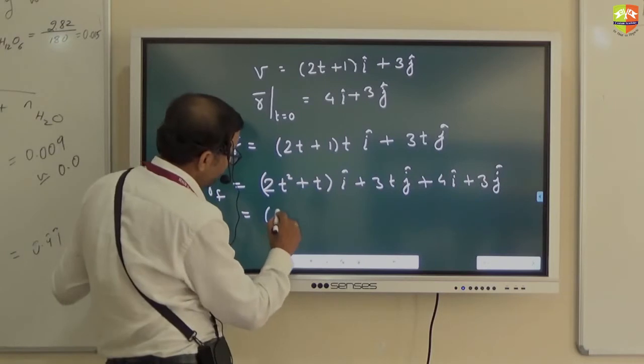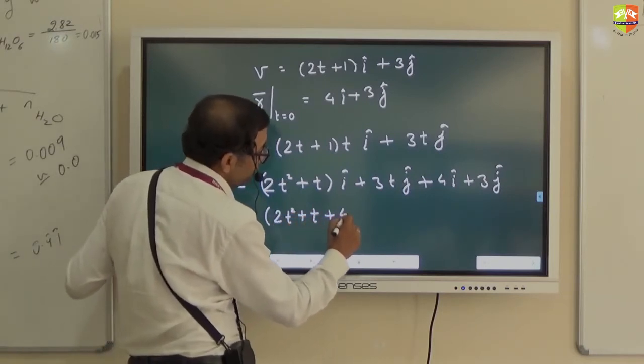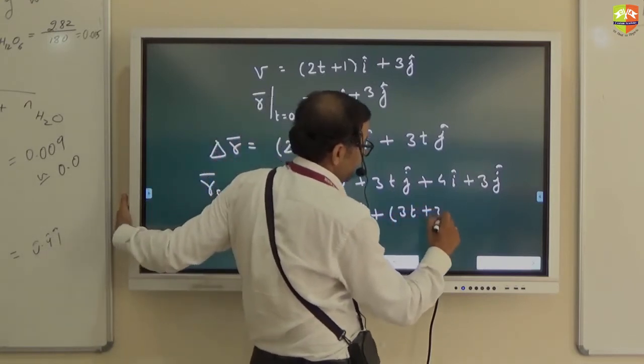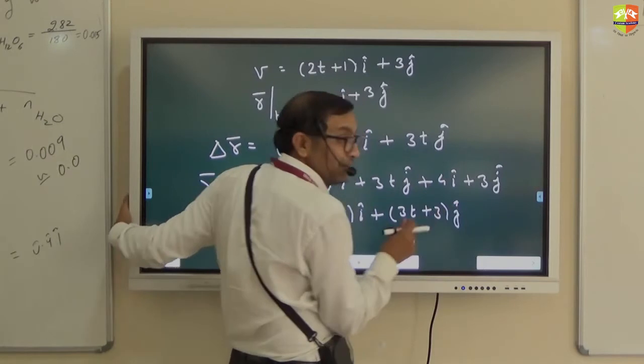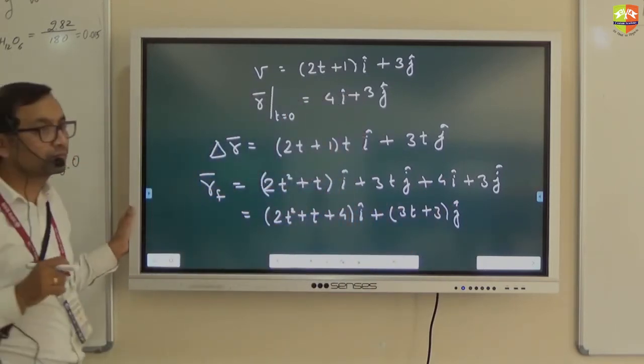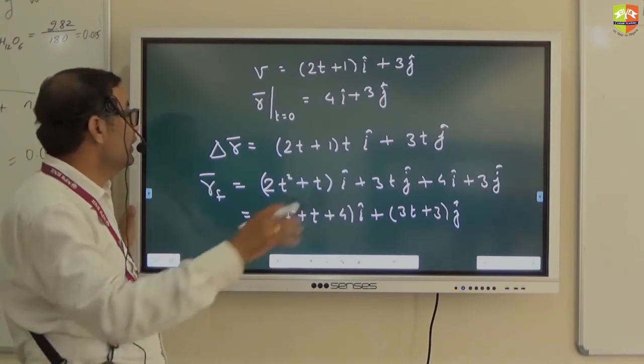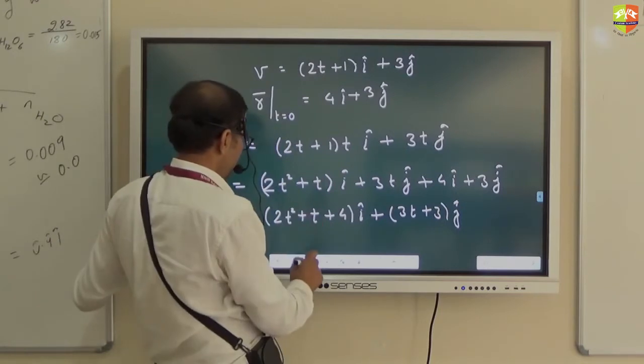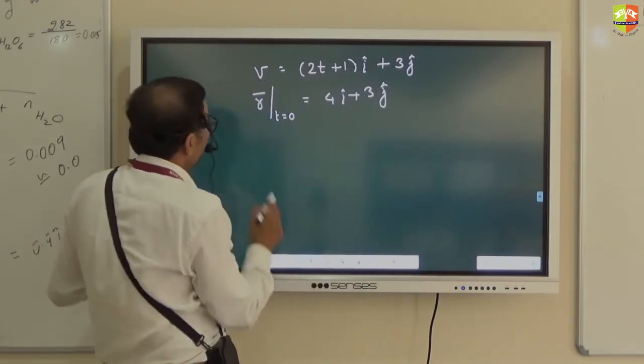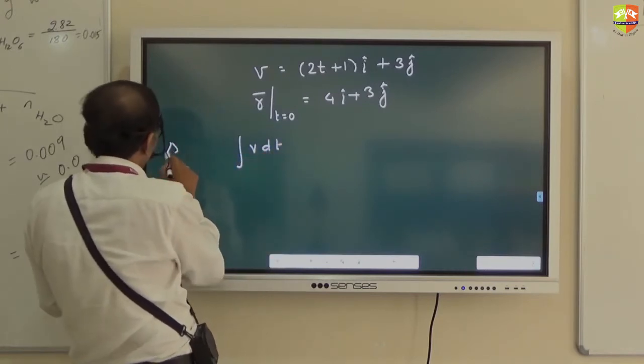This will come out to be 2t square plus t plus 4i cap plus 3t plus 3j cap. Now this is the position vector. You remember how to write position vector? Oh yeah, yeah, yeah. It's correct. It's correct. Sorry about that.